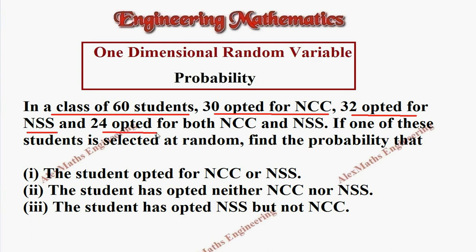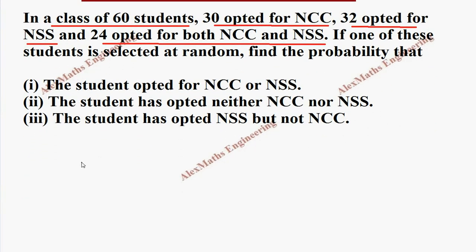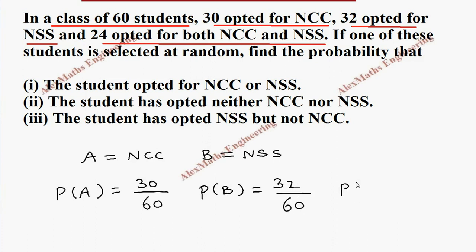for NSS and 24 opted for both NCC and NSS. Let's name A as NCC and B as NSS. Now P of A is 30 opted for NCC, means 30 out of 60. P of B is NSS, 32 divided by 60, and A intersection B is the one opted